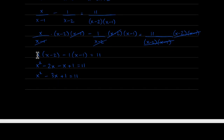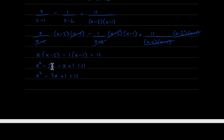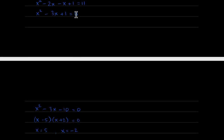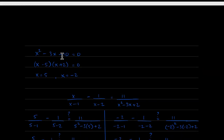Expanding: x times x is x squared, x times negative 2 is negative 2x, negative 1 times x is negative x, and negative 1 times negative 1 is positive 1. This gives a quadratic, so we set it equal to zero. Combining like terms: negative 2x minus x is negative 3x. Bringing 11 to the other side: 1 minus 11 is negative 10. Using the AC method with a equals 1, we factor to x minus 5 times x plus 2 equals 0.